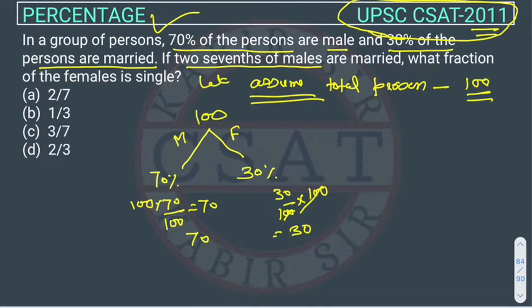Now, if 2/7 of the male are married, how many are 2/7 of male? 7 will divide 70, giving 10 times 2, which is 20. So 2/7 of males are married. These are married males: 20.